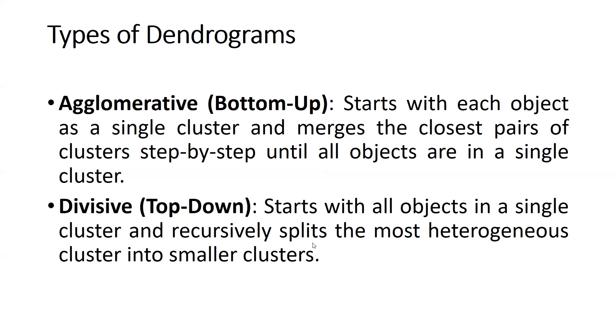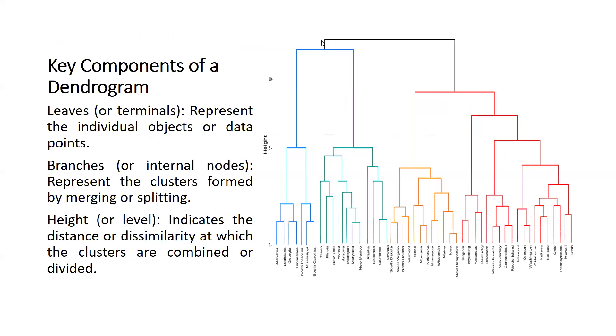When we talk about top-down, it starts with all objects in a single cluster and recursively splits the most heterogeneous cluster into smaller clusters. The topmost one - all these clusters within this cluster - then is divided into two, and further this cluster is divided into further more clusters. Then we can see the heterogeneous picture.